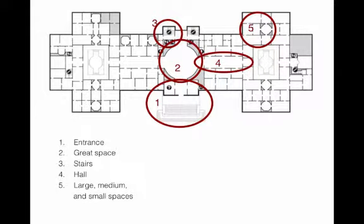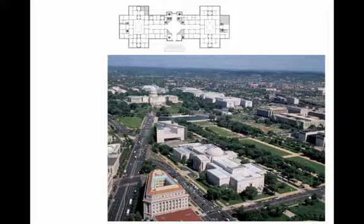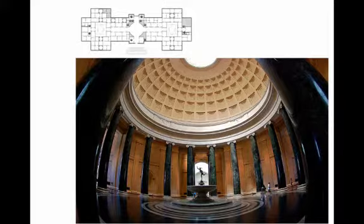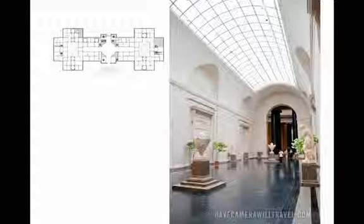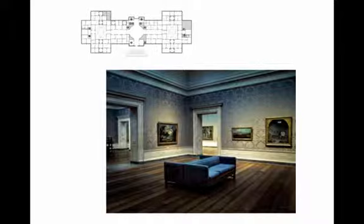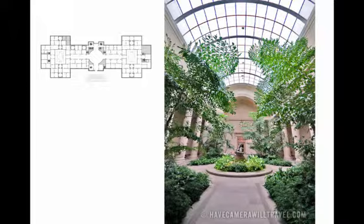The five organizational elements are: entrance; great space with a dome; stairs; halls for circulation instead of corridors; and large, medium, and small spaces. When your feet get tired after several hours in the museum, there's a garden. We're going to find this is the exact organization of Louis Kahn's Yale British Art Studies Museum — these underlying Beaux-Arts principles carried forward into modern architecture.